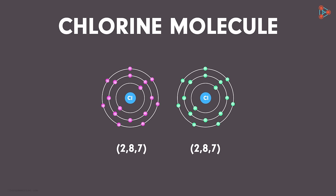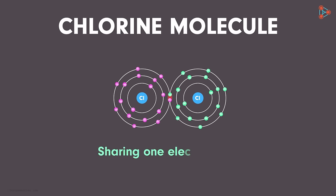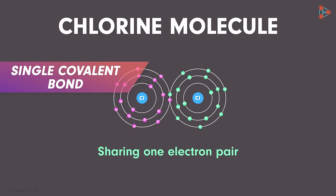And that is why we find two chlorine atoms coming together and forming a bond by sharing one electron pair. Now if we look at this orbit individually, it has eight electrons. And this orbit too has eight electrons. Stability achieved for the chlorine molecules. This was an example of a single covalent bond.